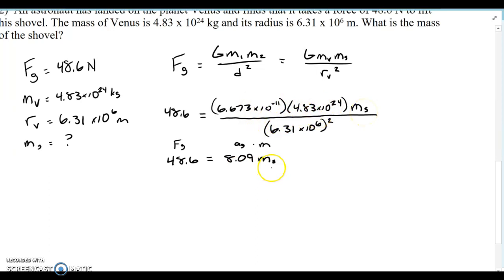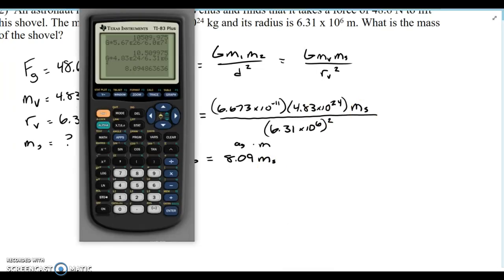And so now to solve for the mass of the shovel, I'm just dividing both sides by 8.09. So I'm going to take the weight, 48.6, and divide by the answer, and that negative sign subs in the answer so I don't have to round anything. And I get 6.